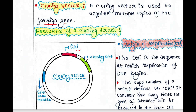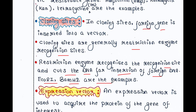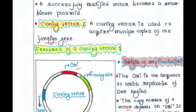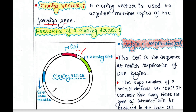The third feature is cloning sites — this is where the foreign gene is inserted into the vector. Cloning sites are generally restriction enzyme recognition sites. The restriction enzyme recognizes the recognition site and cuts the DNA for insertion of foreign DNA. EcoRI and BamHI are examples. If your cloning site contains an EcoRI site, the EcoRI enzyme will cut this site, making space to insert the foreign gene. So a cloning vector must contain ORI, a cloning site, and a selectable marker.